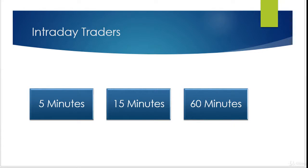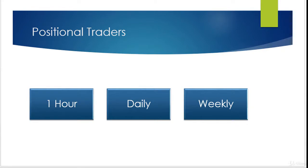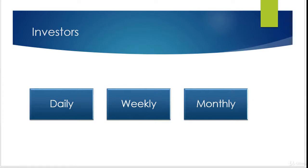The 5 minute chart is used to find low risk entry points. For a position trader we will use the 1 hour chart, daily chart, and weekly chart — our focus should be on daily charts. The weekly chart will tell us the major support and resistance level, and the 1 hour chart will tell us our entry point. For an investor, we use daily, weekly, and monthly charts, focusing on the weekly chart. The monthly chart tells us resistance and support levels, and the daily chart tells us the entry points.